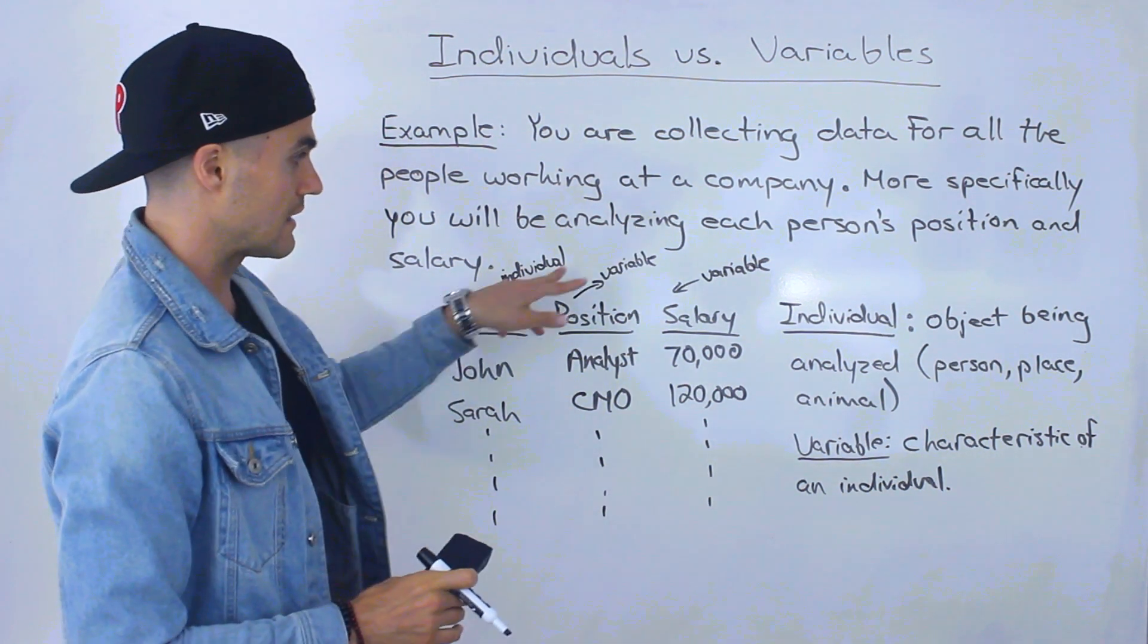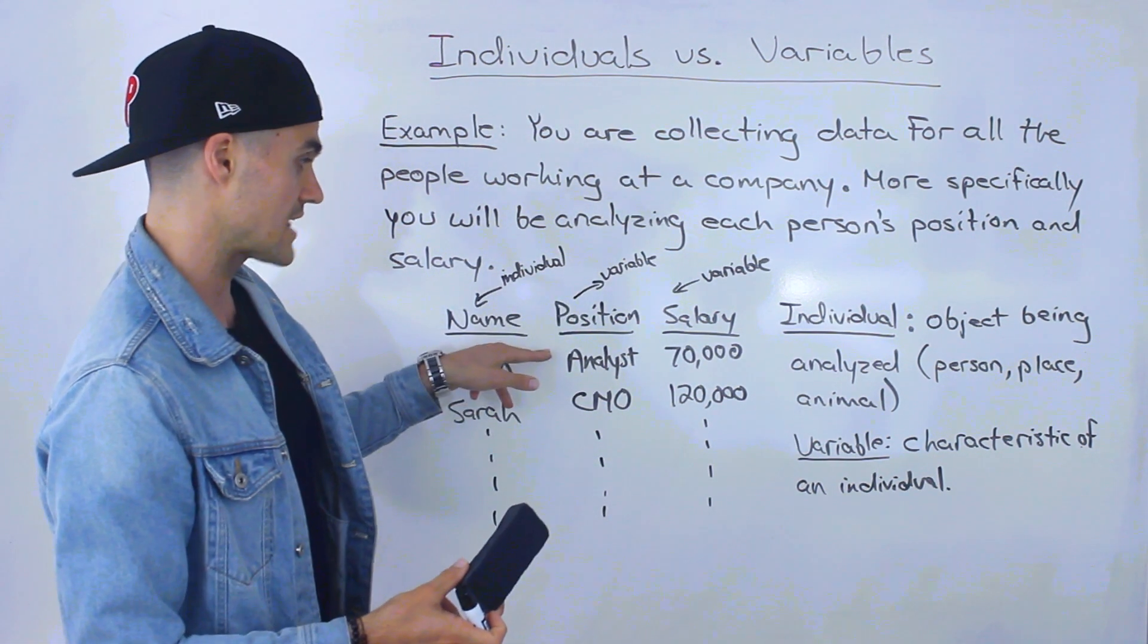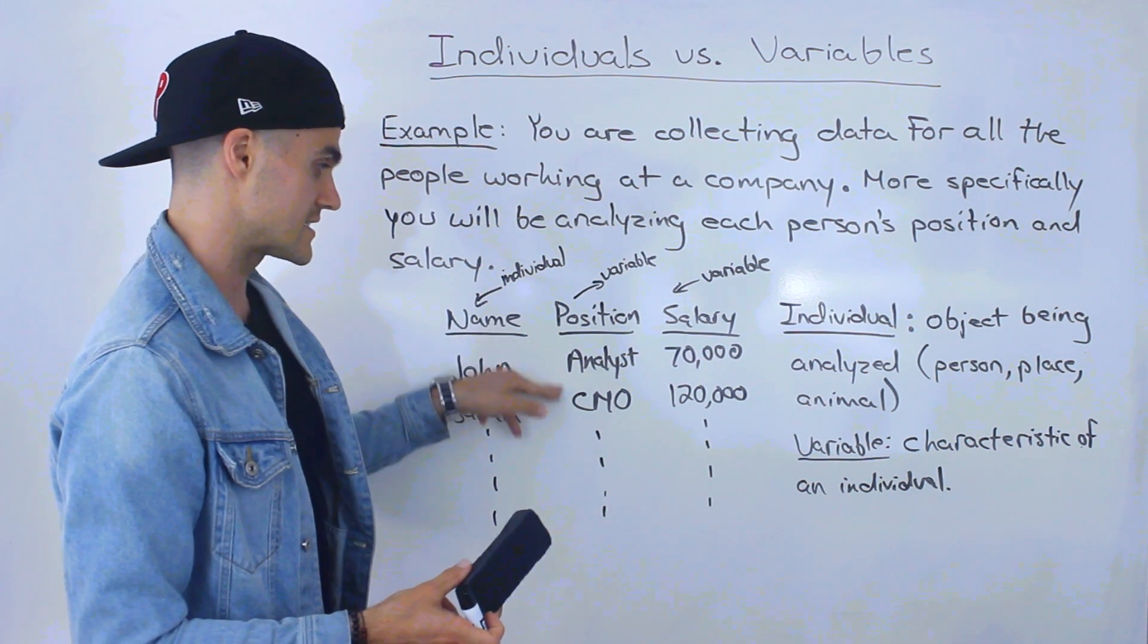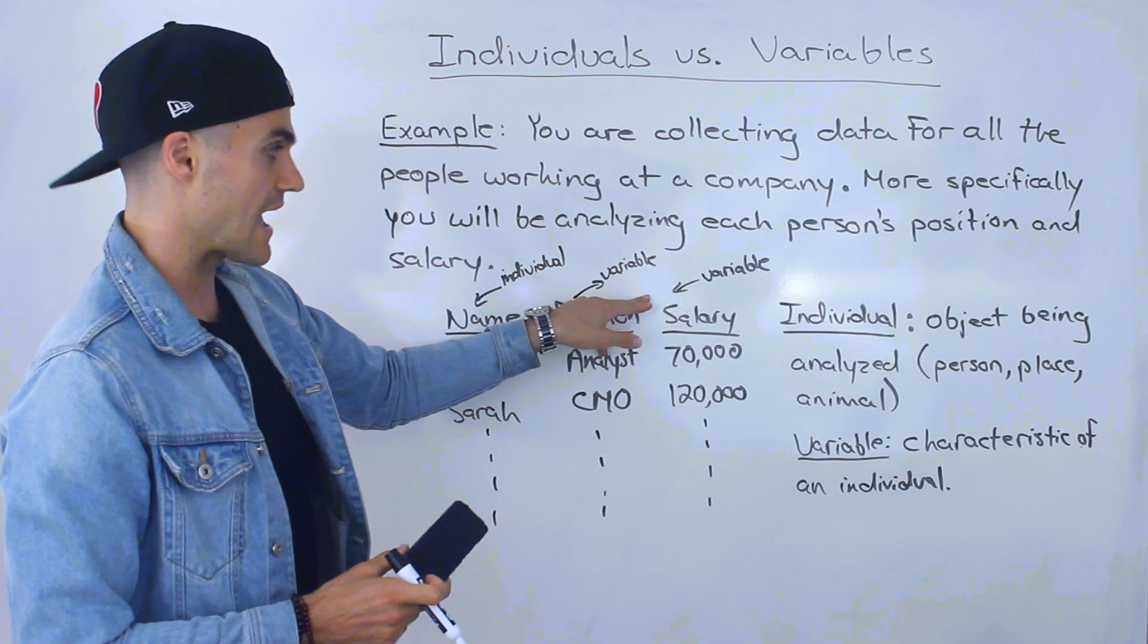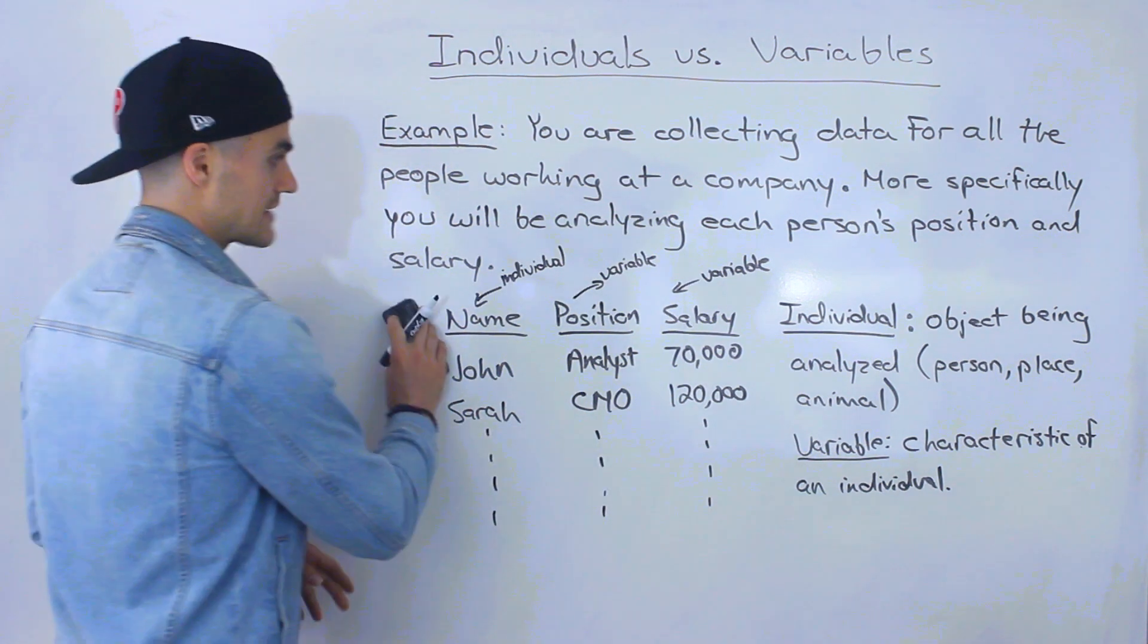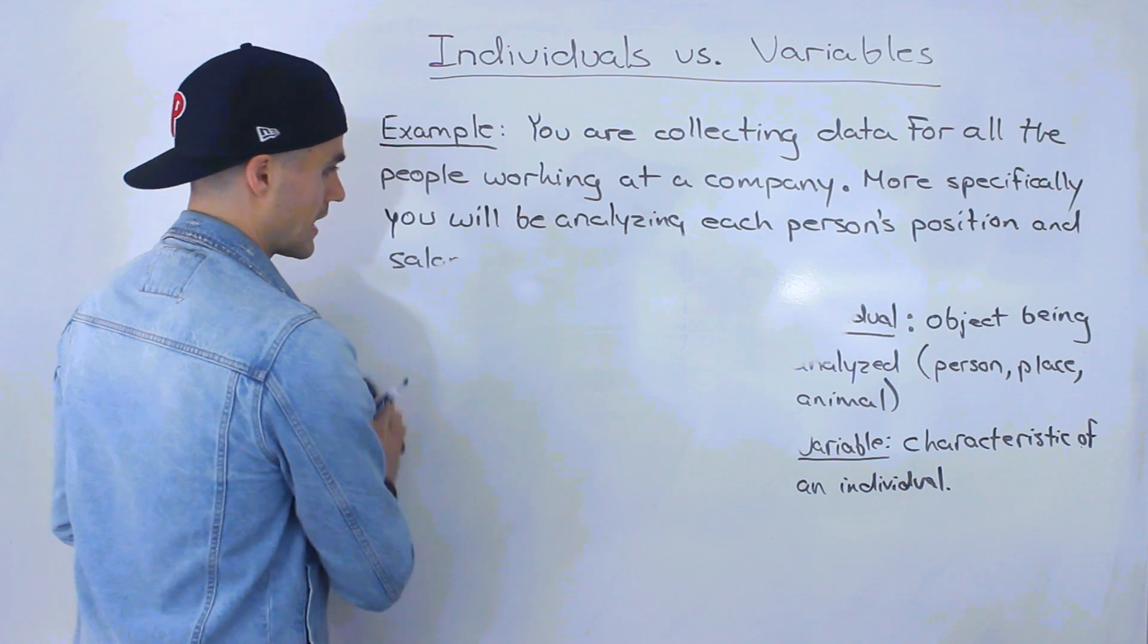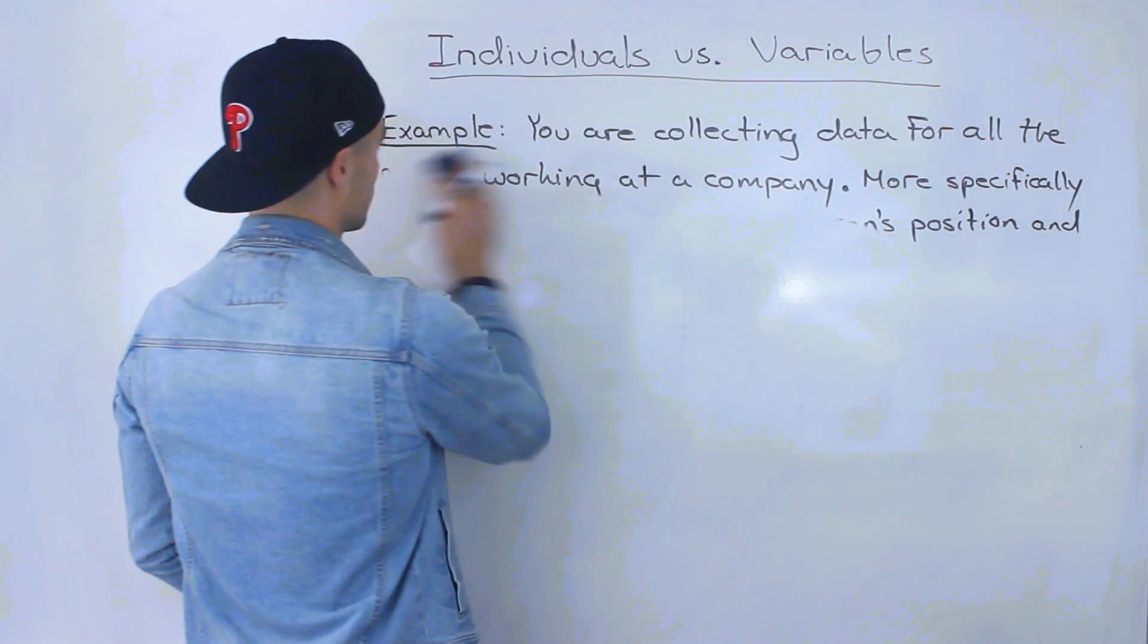And notice that these two variables are very different. Because notice that this variable, this job position variable, it's described in words, while this salary variable is described with numbers. And actually that's a big difference that I want to introduce when you're dealing with different types of variables.